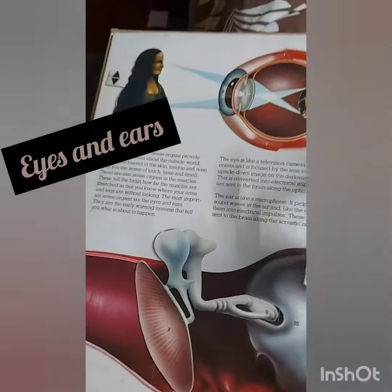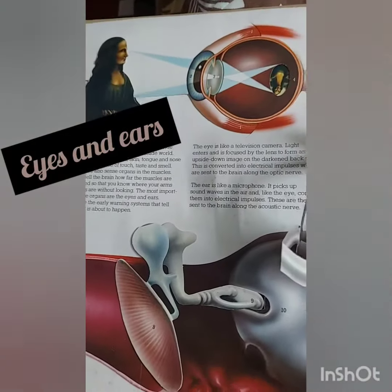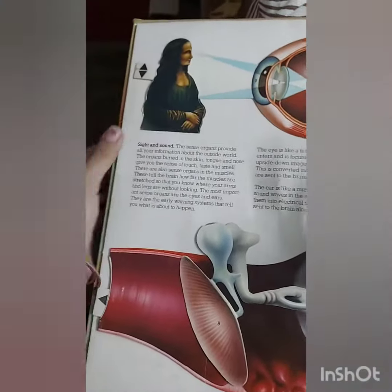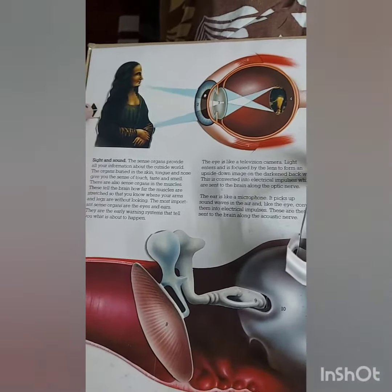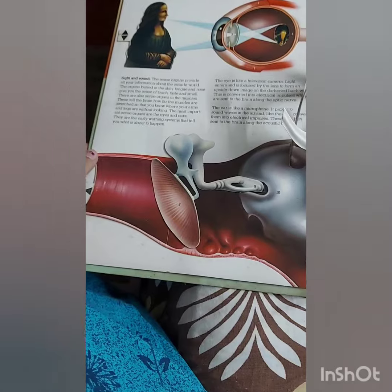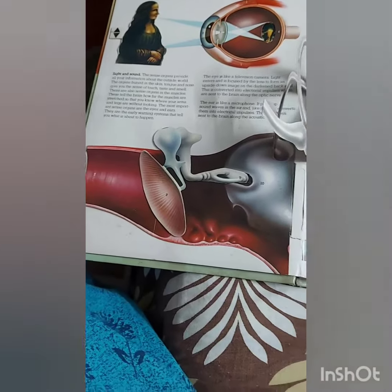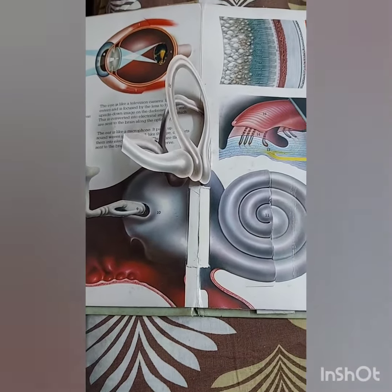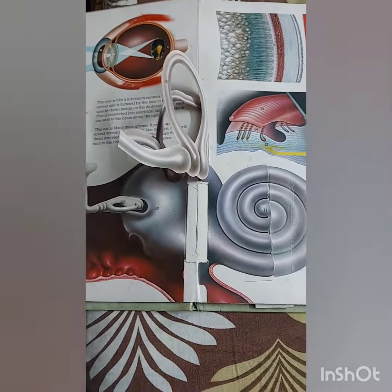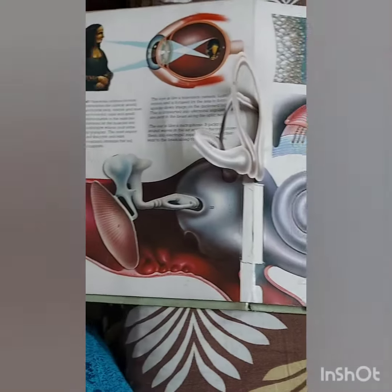The most important sense organs are the eyes and the ears. With eyes, we can see images. See here the images inside the retina — these are formed in an inverted manner. These images are converted into electrical impulses and are sent to the brain through optic nerves, so that we can see the image in a normal way.